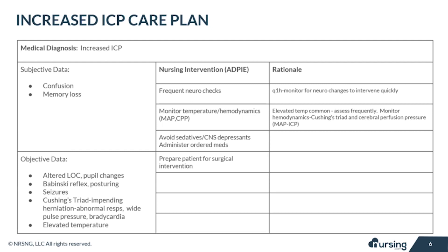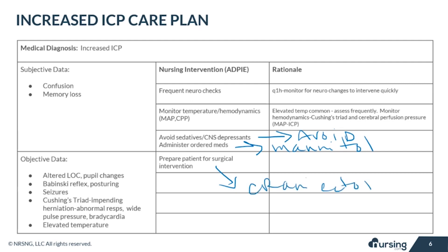For patients with increased ICP, sedatives and CNS depressants need to be avoided because they can alter neurochecks. Common ordered medications include osmotic diuretics like mannitol and hypertonic saline to decrease edema, and corticosteroids to decrease inflammation. In some cases it may be necessary to prepare the patient for a surgical intervention like a craniectomy, which removes a portion of the skull to allow space for swelling or placement of an external ventricular drain in the event of elevated ICP.